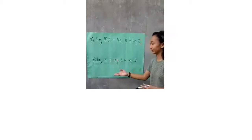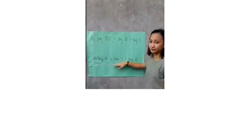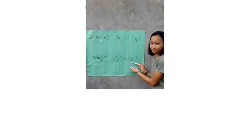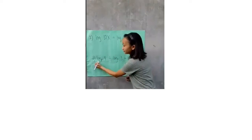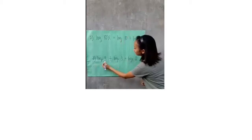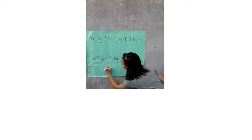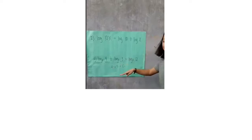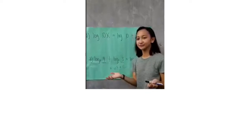In example number 3, we have logarithm of 4 to the base 2 plus logarithm of 3 to the base 2. The bases are the same — logarithm to the base 2 — so we will just multiply 4 and 3. 4 times 3 gives us 12. Since the bases are the same, we have logarithm of 12 to the base 2. This is the end of the logarithm of the product.